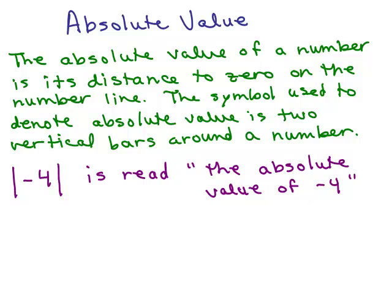What is absolute value? The absolute value of a number is its distance to zero on the number line. And the symbol used to denote absolute value is two vertical bars around a number.